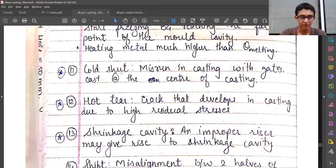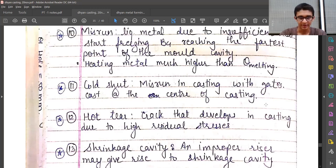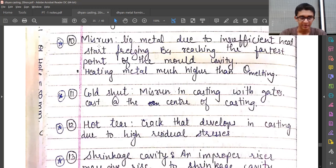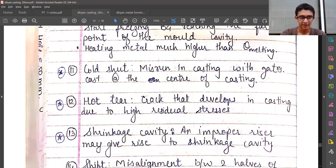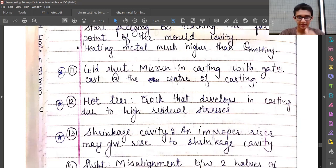Eleventh is cold shut, also very important—misrun in casting with gates cast at the center of casting. Misrun happening with gates is a possibility when we have only single casting. Cold shut means when misrun happens with multiple gates. There are a lot of multiple products we will be manufacturing at the same time. In that case, we should pour the liquid metal from the center of casting.